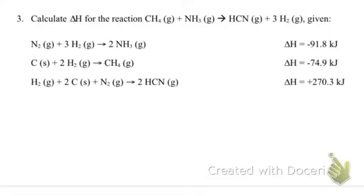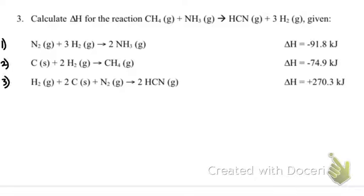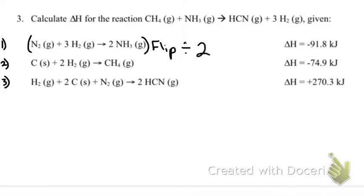Next Hess's Law problem — calculate the delta H for that reaction. I want CH4 on the reactant side, NH3 on the reactant side, and on the product side I want HCN and three H2s. Reaction one, reaction two, reaction three. On reaction one, I see NH3 on the product side; I want it on the reactant side, so I need to flip the reaction. But I also have two ammonias here and I only want one, so I also need to divide by two. I'll rewrite that reaction flipped and divided by two.